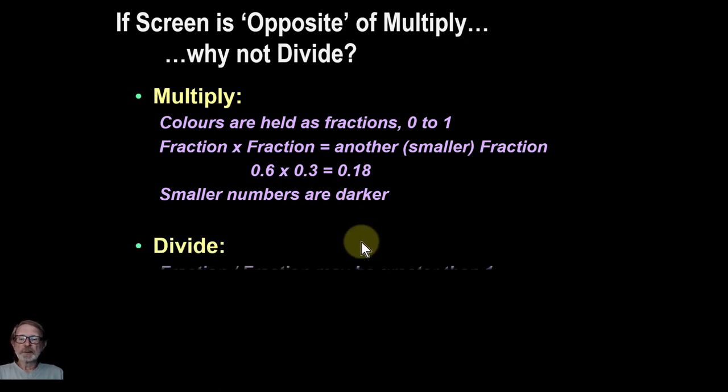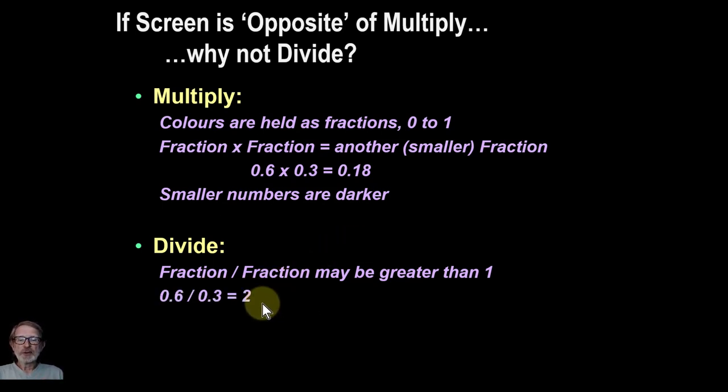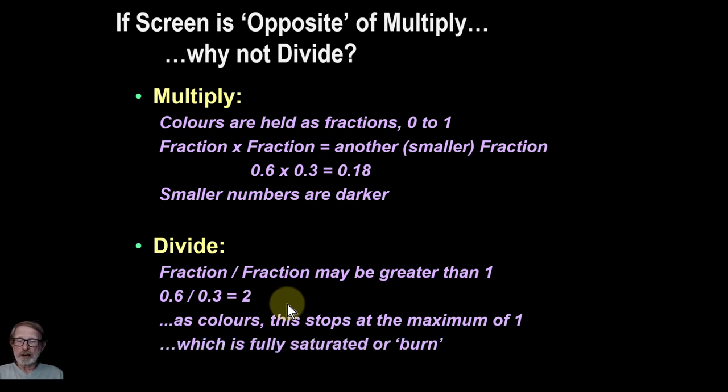So in divide, if you try doing by a divide, then you're going to get a fraction divided by a fraction again, but that can be greater than 1. So for example, 0.6 divided by 0.3 is 2. And if you can only get from 0 to 1 as a color, then it's basically going to be burnt out. So you would get a problem. So you get it fully saturated, you get burnt. So divide is not really going to work to make things lighter. You just get some weird effects. An awful lot of things will be just plain white.